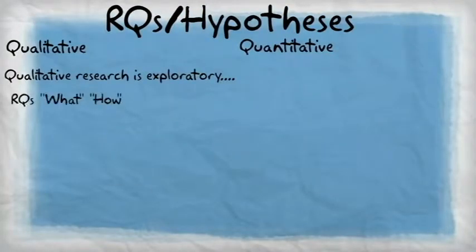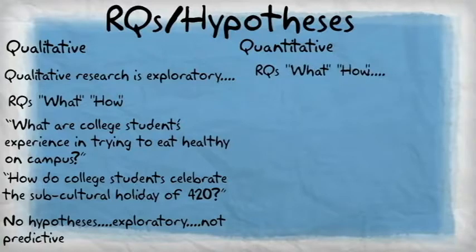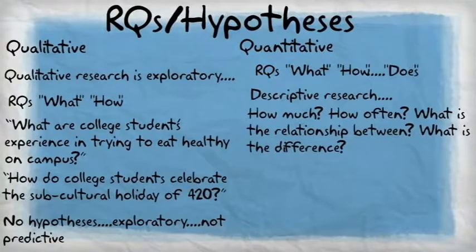Now let's talk about the research questions. Since qualitative research is exploratory in nature, qualitative research questions usually start with the words 'what' or 'how'. Similar to qualitative research, a quantitative research question can start with the words 'what' or 'how', but they might also include the word 'does' in the beginning of the question.